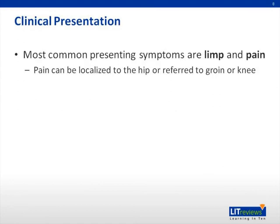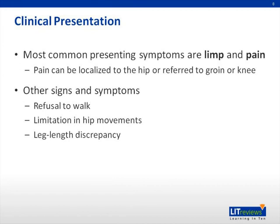Pediatric patients with Legg-Calvé-Perthes will commonly present with limp and pain. It is important to note that patients may complain of pain localized to the hip or groin, or it can be referred to the thigh or knee. Limp may be more prominent after strenuous activity or at the end of the day. Other signs and symptoms include refusal to walk, limitation in hip movements such as internal rotation and abduction, leg length discrepancy secondary to adduction contracture, or true shortening of the involved side from femoral head collapse.